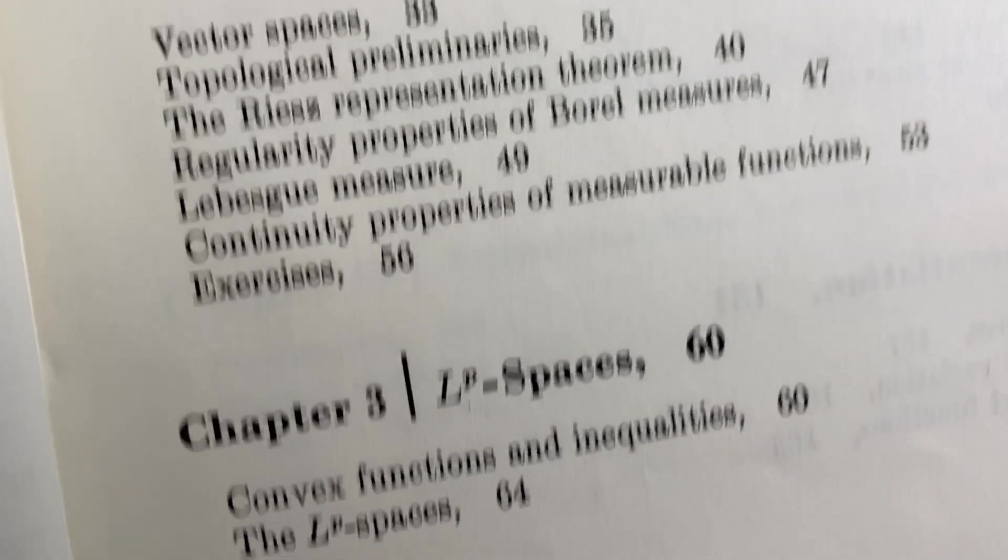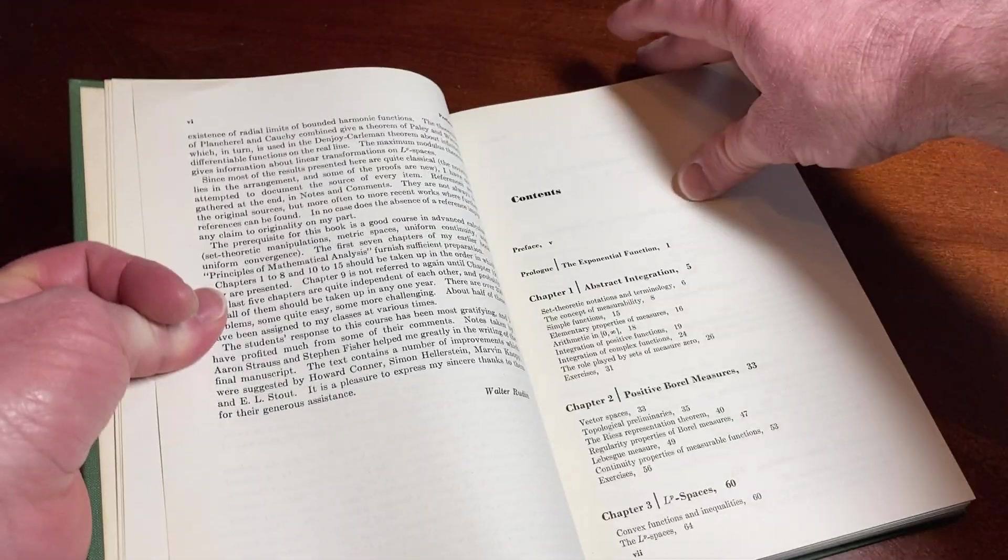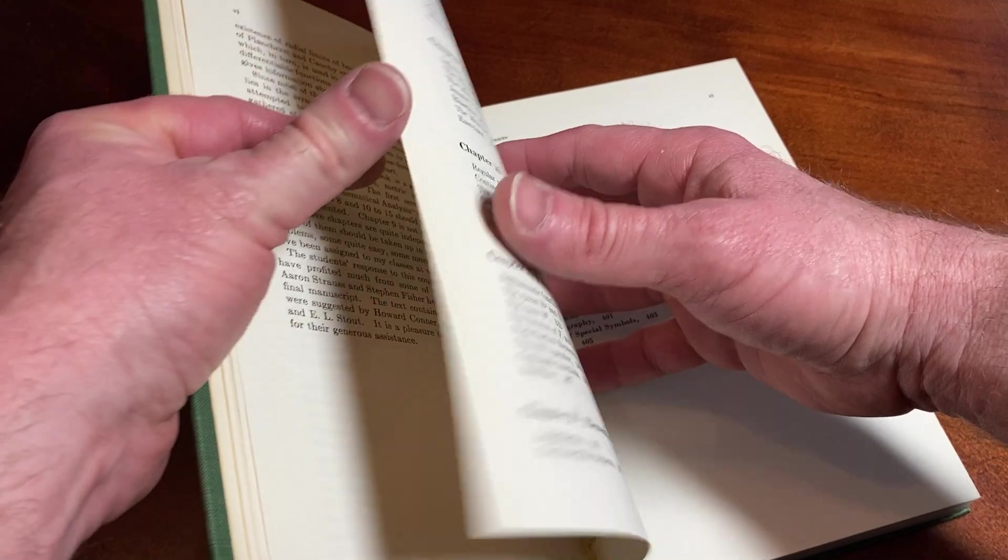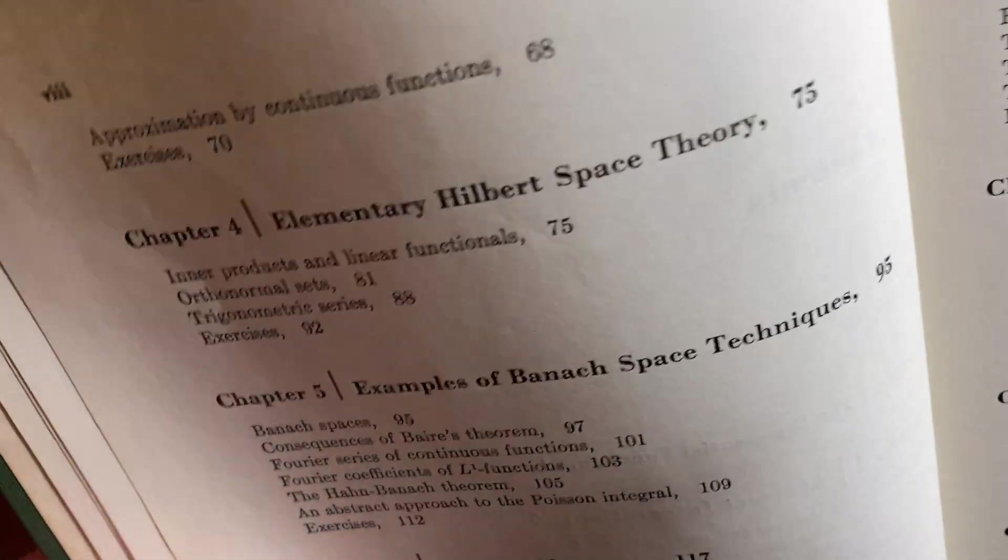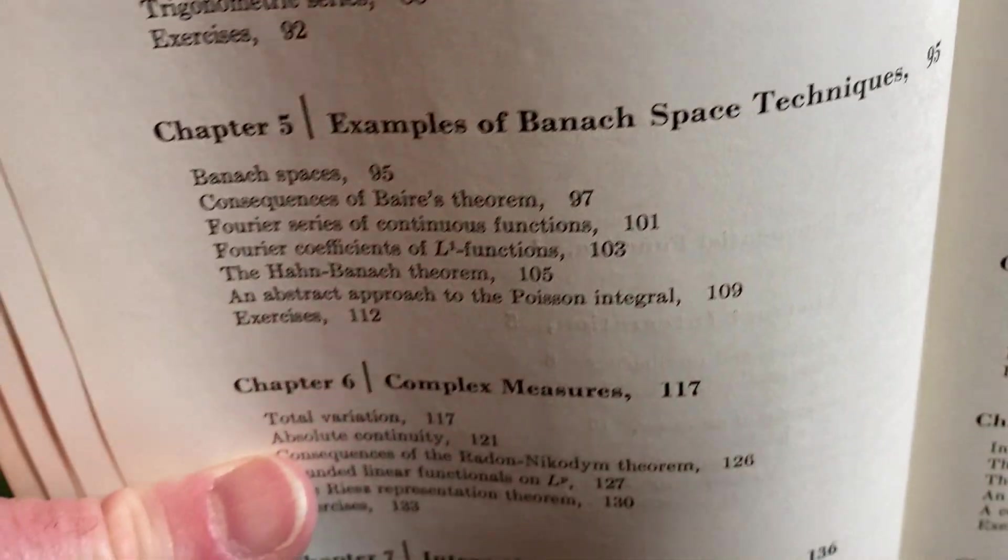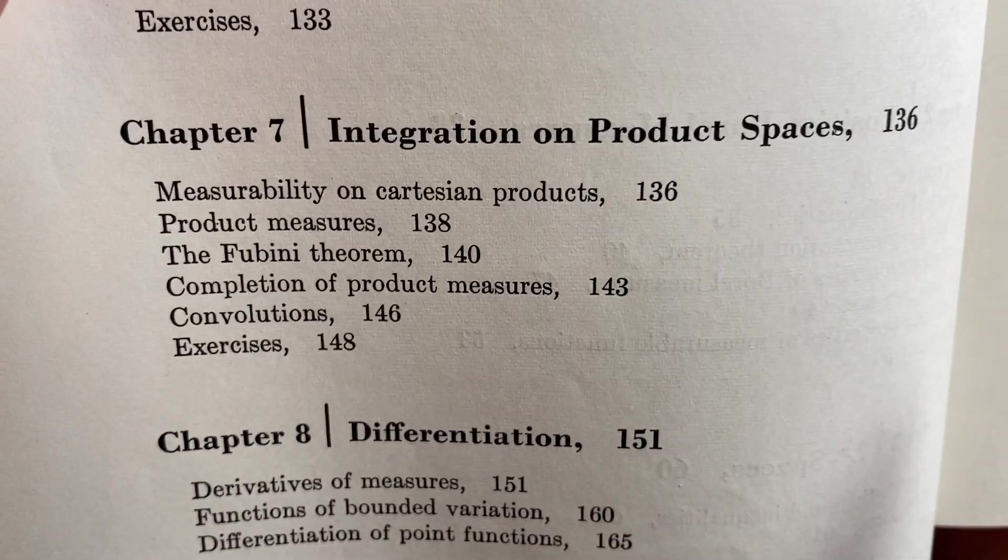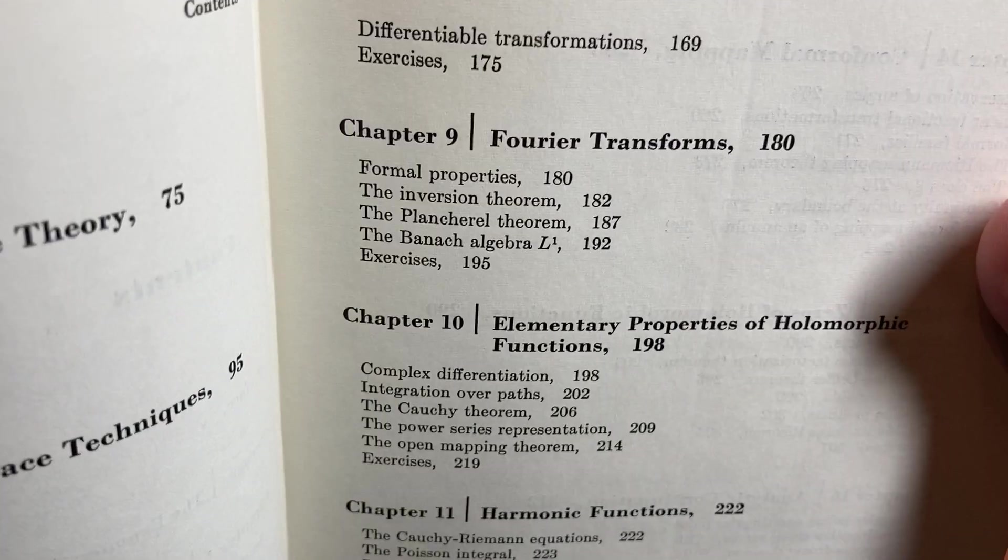Abstract integration is chapter one. Definitely worth owning if you're studying real analysis. You should have this book. I don't think there's a question to that. I think every person who learns real analysis should have a copy of Rudin in their library.